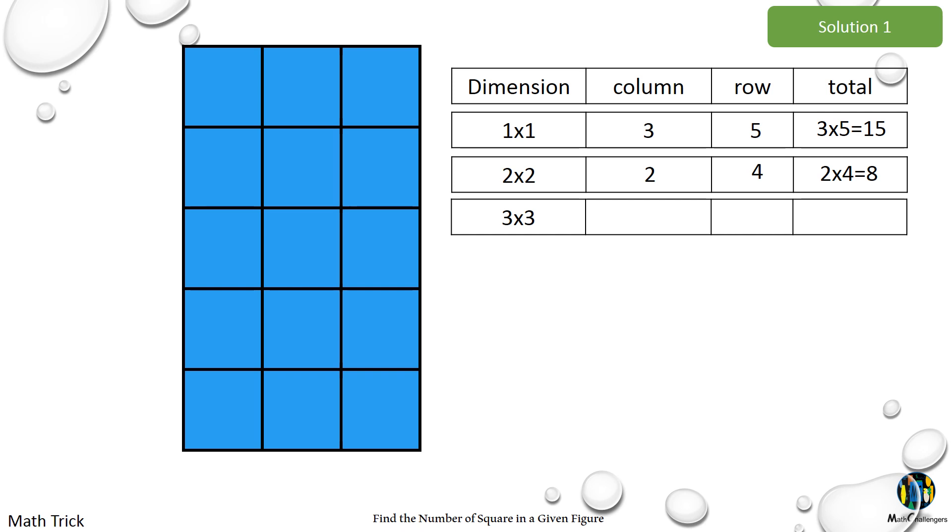For 3 by 3 squares. We have 1, 3 by 3 square vertically and 3 horizontally.